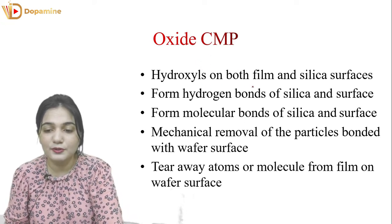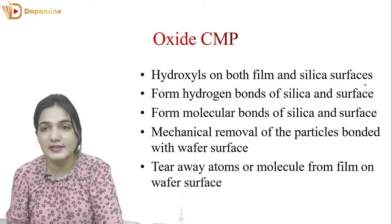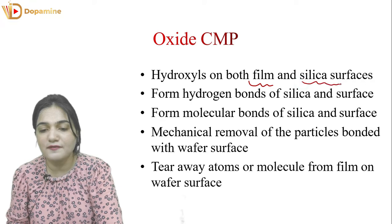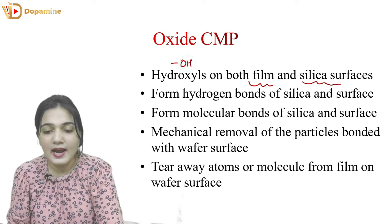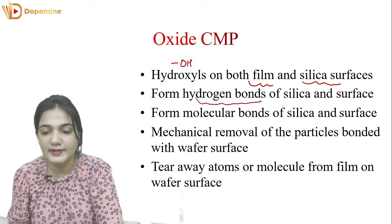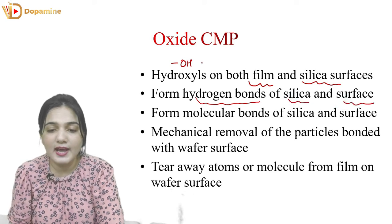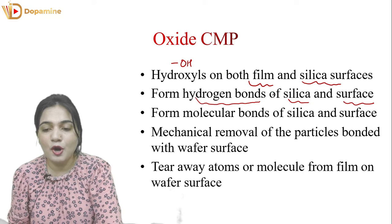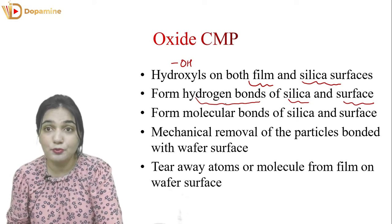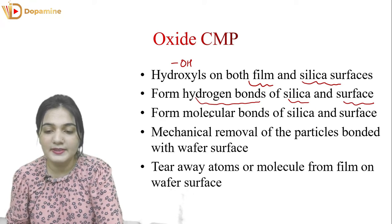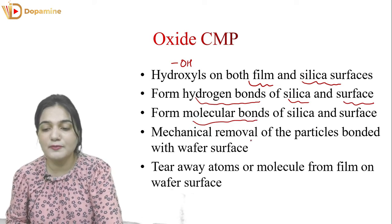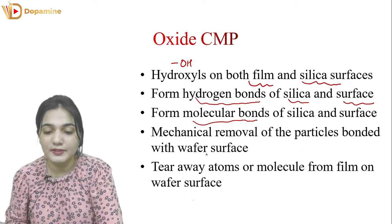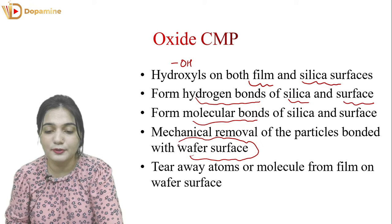Here we have hydroxyls on both the film as well as the silica surface. On the film and silica surface, we have hydroxyl groups. This hydroxyl group forms a hydrogen bond between the silica and the surface. With the help of this hydroxyl group, a hydrogen bond is formed between the silica and the surface. I will explain the whole mechanism with pictures. When a molecular bond forms between the silica and the surface, mechanical removal occurs — the particles bonded with the wafer surface are mechanically removed.